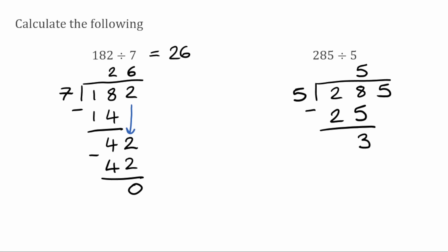Now that we've done that, we move across to the next digit, which is a 5. So I'm going to bring that down. I've now got 35. We now want to see how many times does 5 fit into 35. Well, that will go 7 times because 7 times 5 is 35. So when we subtract those numbers, 35 take away 35 is 0. Because we've got a 0, we know we don't have any remainder. So the answer to 285 divided by 5 is 57.